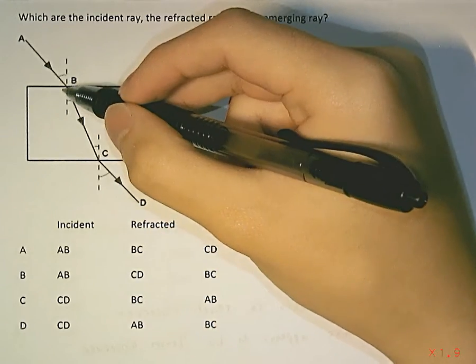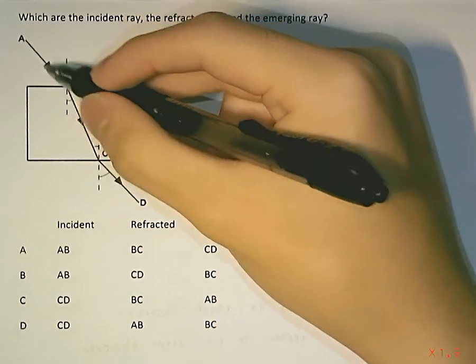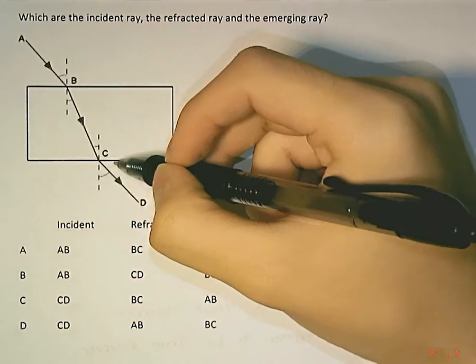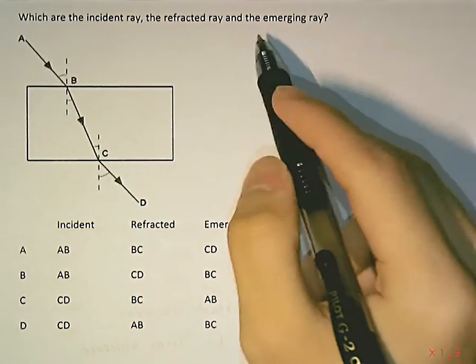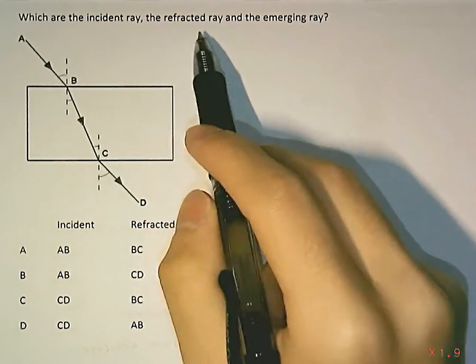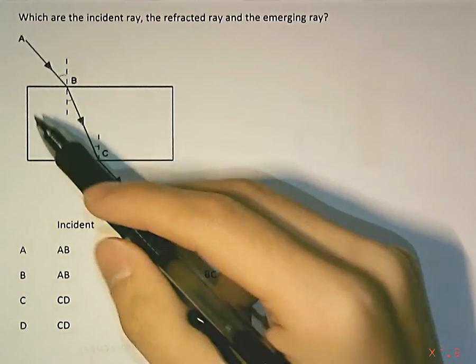So yes, I know refraction takes place twice, once when the ray hits this boundary and once when the ray hits this boundary. But because we already have a name for CD, which is emerging ray, that's why refracted ray is going to be referring to BC.